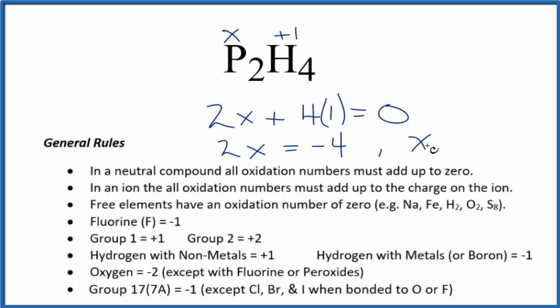The oxidation number on each of these phosphorus atoms is -2, and that makes sense. 4 times 1 is 4, 2 times -2 is -4, so 4 and -4 gives us zero. This is Dr. B with the oxidation numbers for each element in P2H4. Thanks for watching.